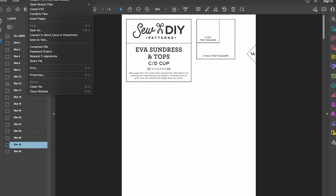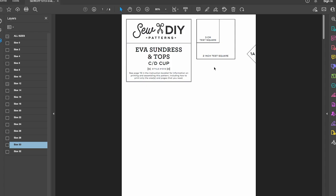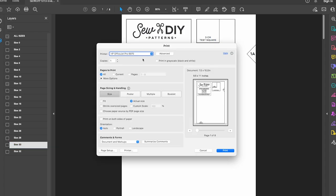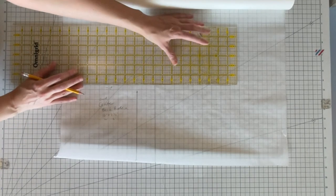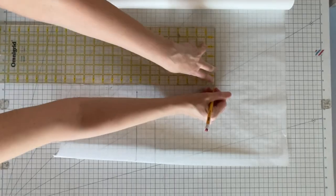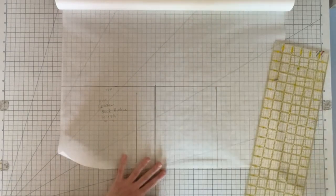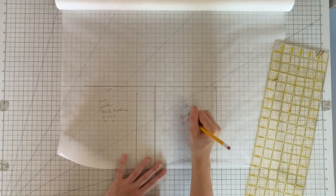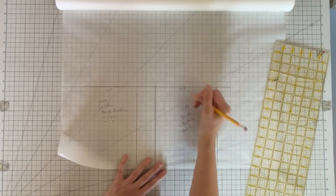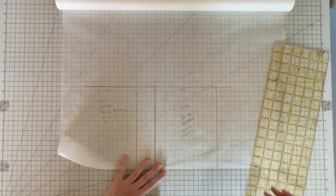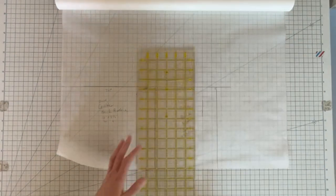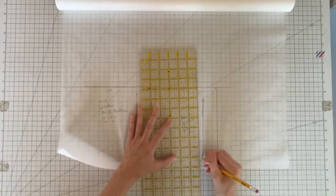This pattern is a hybrid of a traditional pattern that you need to print and a zero waste style pattern that's constructed using rectangles. You will need to print out or project the front bodice and front facing pattern pieces. The remaining pattern pieces are rectangles that you can draw directly on your fabric or on paper. This is a great way to save both paper and fabric.